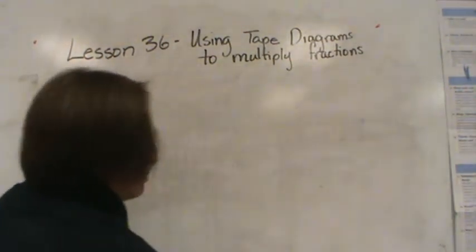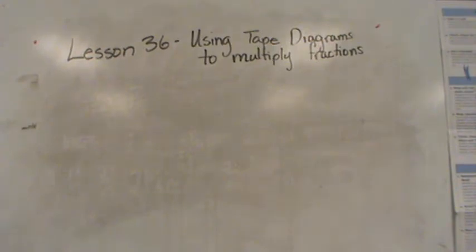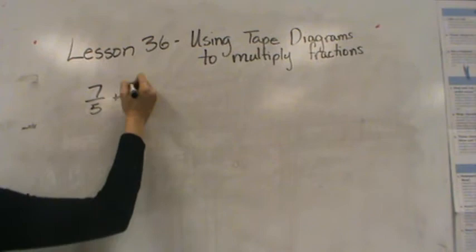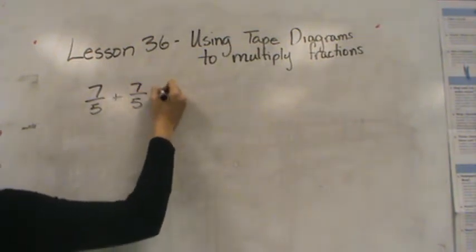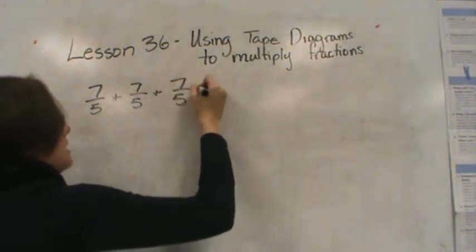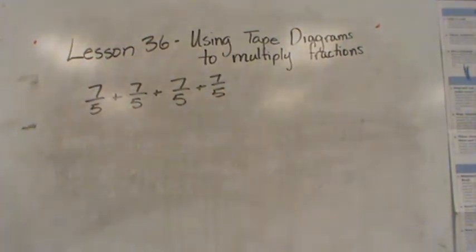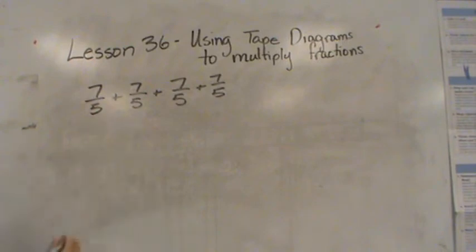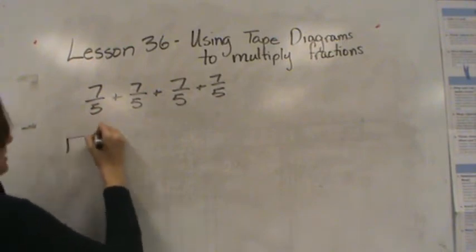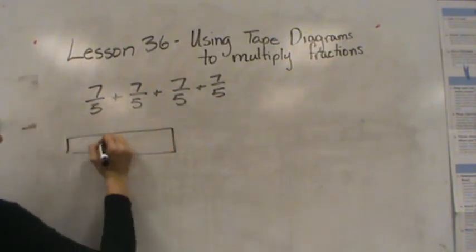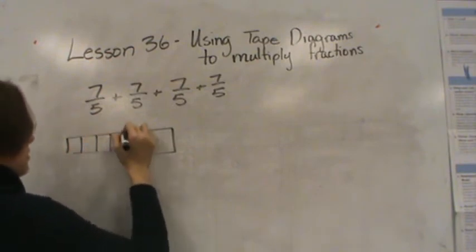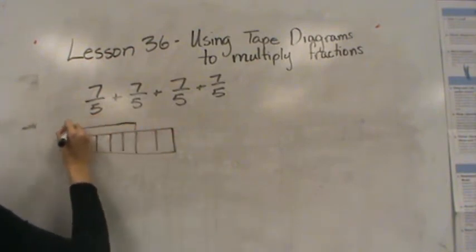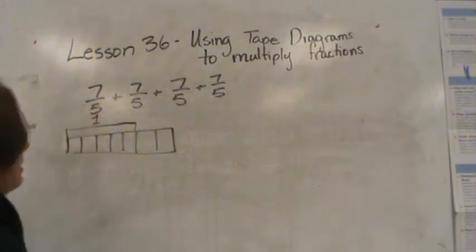Let's do one more tape diagram. So let's do 7/5 plus 7/5 plus 7/5 plus 7/5. Now I need to make sure I represent my whole here, because I have an improper fraction. Remember we did that several lessons ago? So I have 7 parts here, but my whole is really just the 5, right? So make sure you represent that.